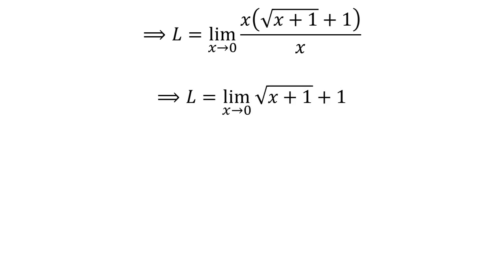After canceling out the common factor x in the numerator and the denominator, we get L equals the limit of square root of x plus 1 plus 1 as x approaches 0.